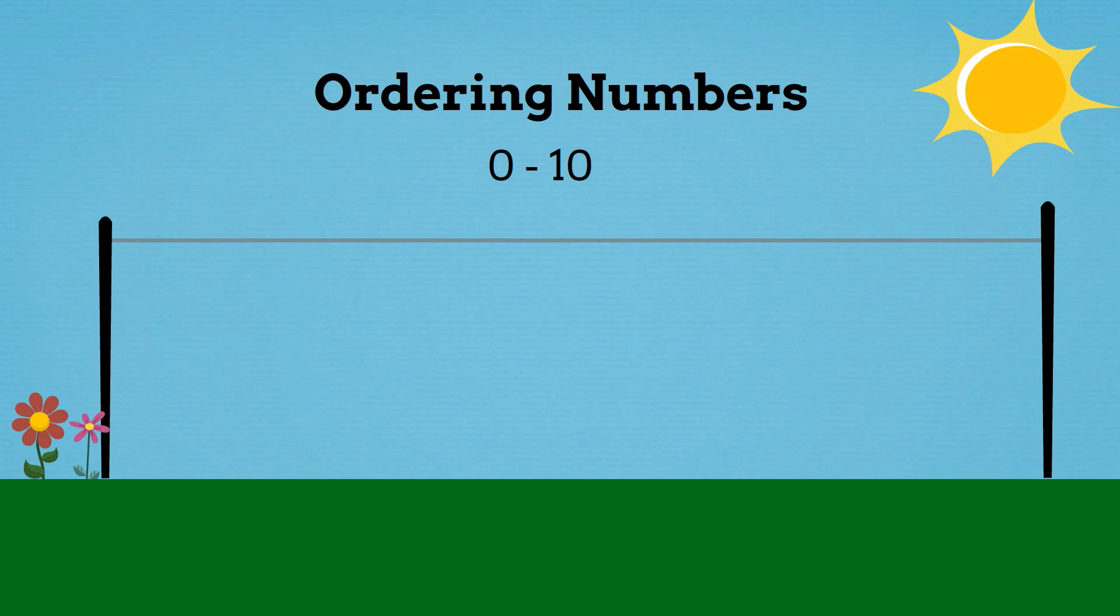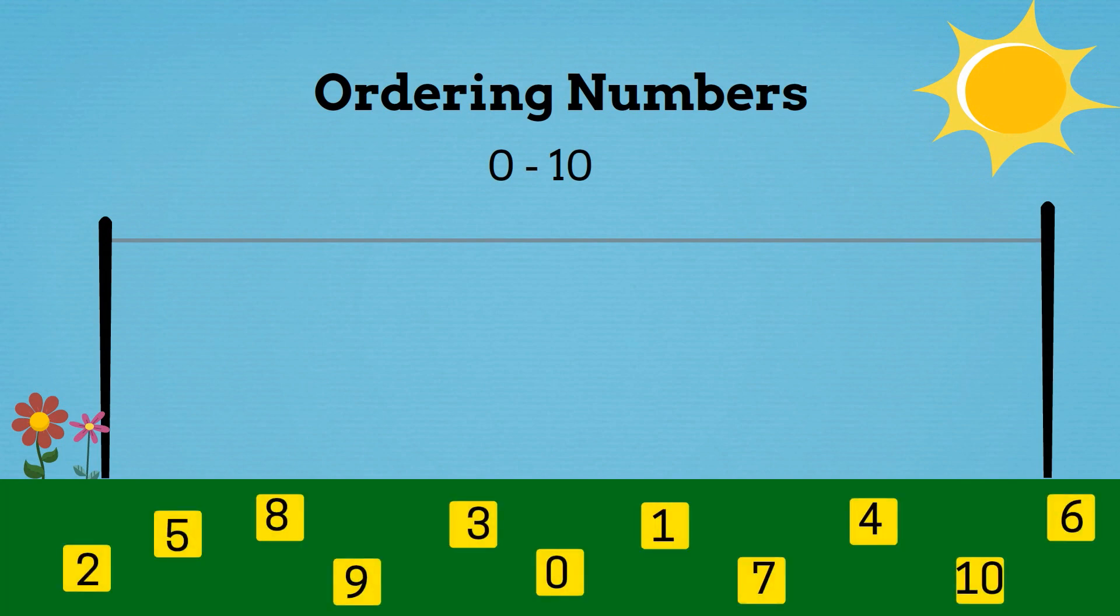I've got my number cards from 0 to 10 and I want to hang them from the smallest number to the largest number on my washing line. Are you going to help me put the numbers in order from lowest to highest? Come on then.